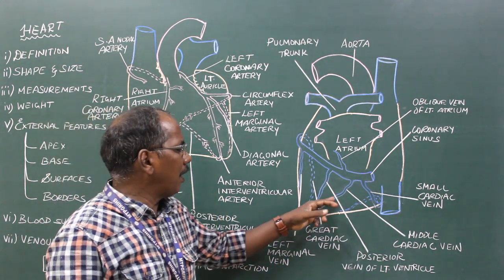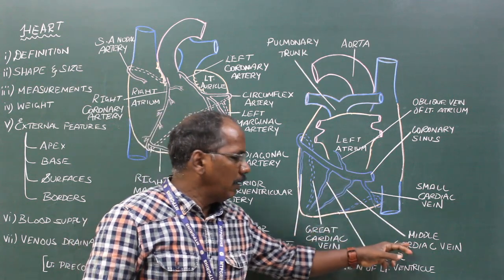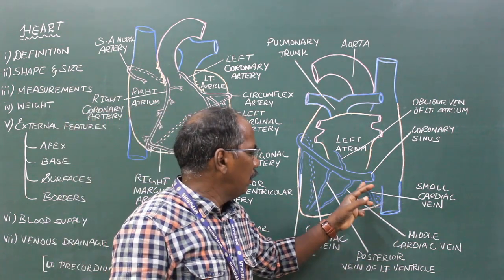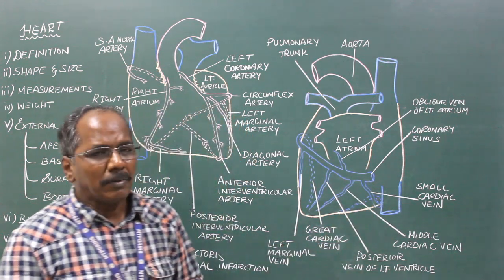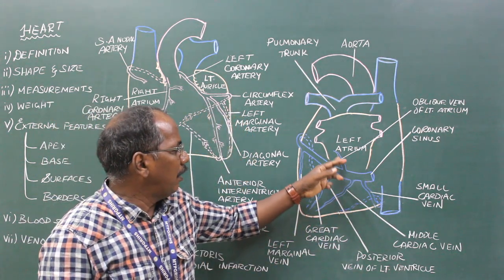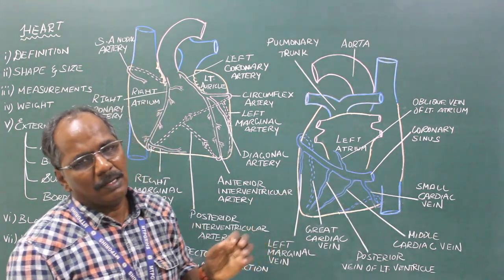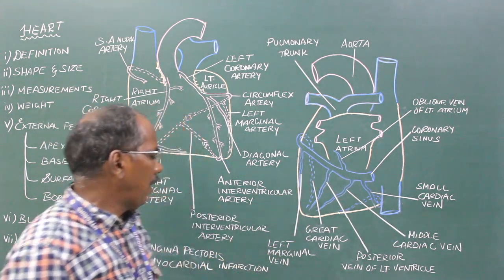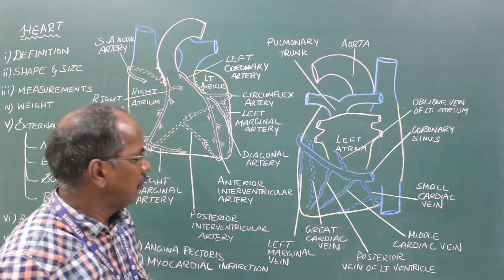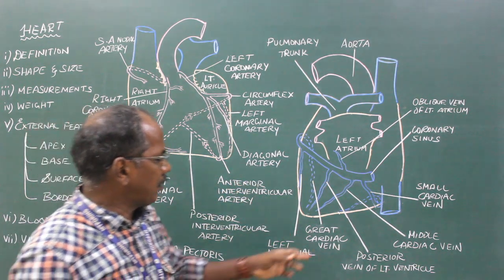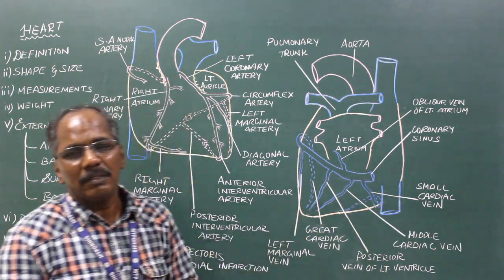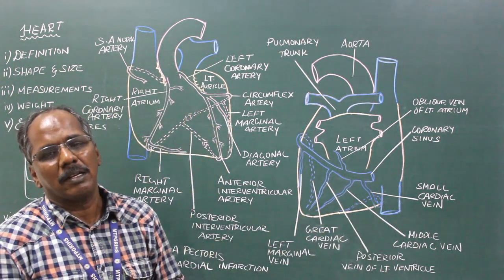Number 2, middle cardiac vein. Number 3, small cardiac vein. Number 4, oblique vein of left atrium, or vein of Marshall. Number 5, left marginal vein. Number 6, right marginal vein. This is the venous drainage of the heart.